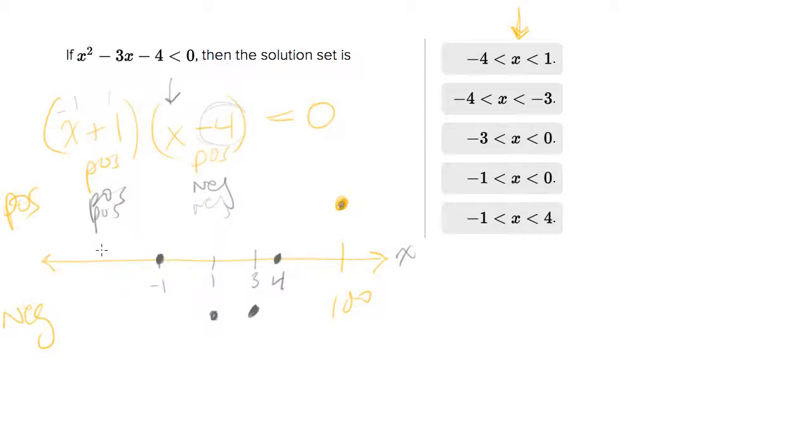So let's say we plugged in X of negative 2. Negative 2 plus 1 is negative 1, so that's negative. Negative 2 minus 4 is negative 6, also negative. So now we have two negative numbers multiplied together, that's positive. So our function looks something like this.